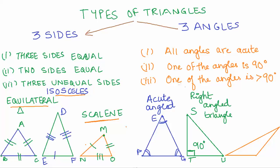The third case is where one of the angles is greater than 90 degrees. This orange triangle — let us call it JKL, with vertex J, vertex K, and vertex L. The angle at L — angle KLJ — is clearly greater than 90 degrees; it is an obtuse angle. This type of triangle in which one angle is obtuse is known as an obtuse angled triangle.